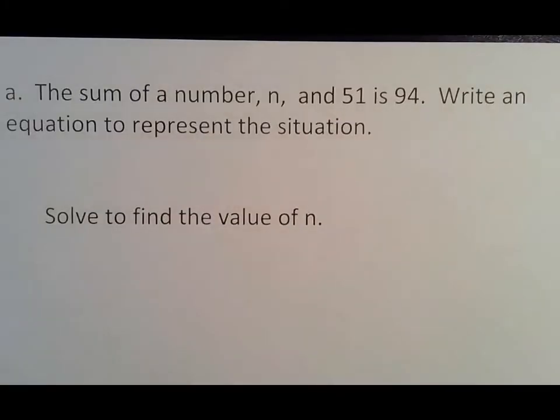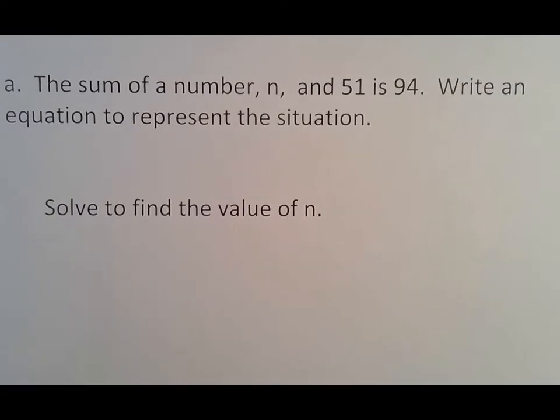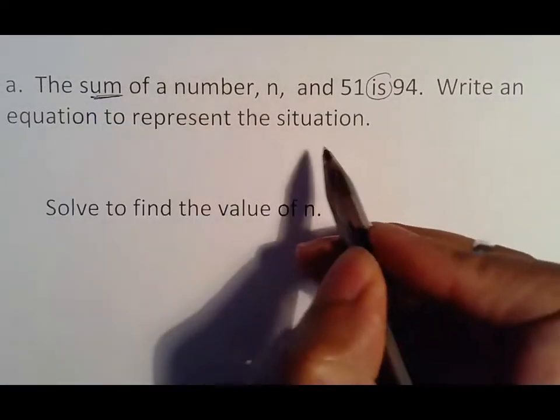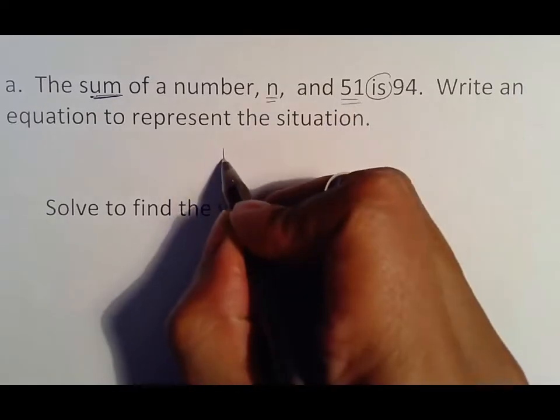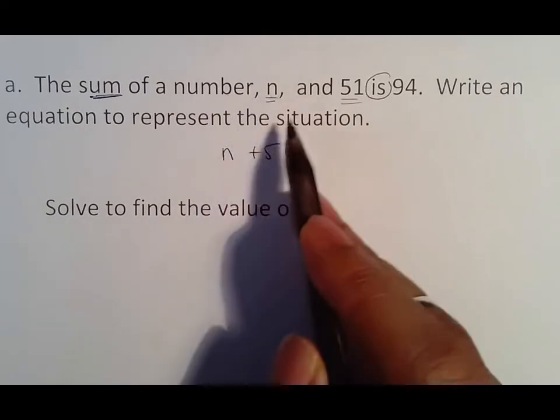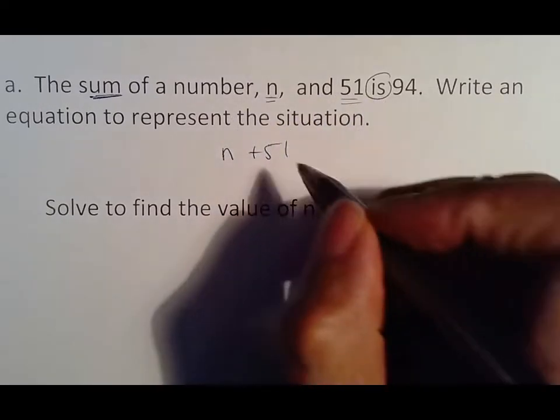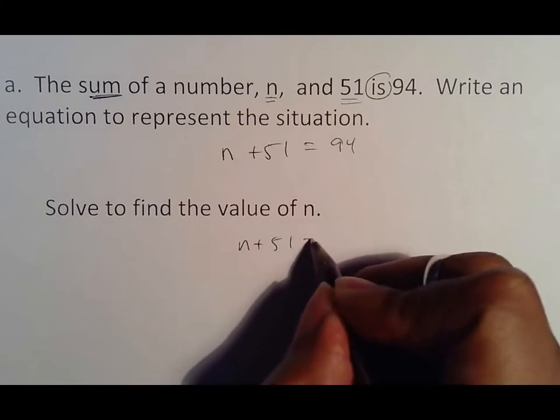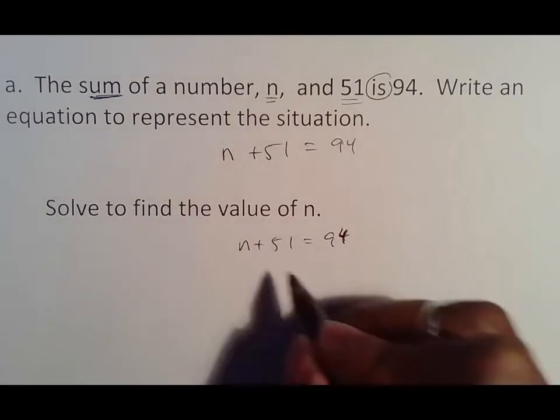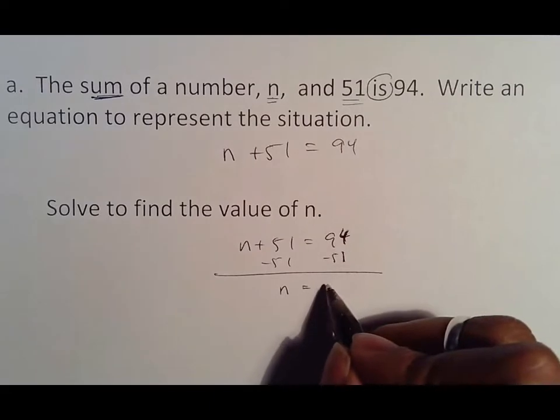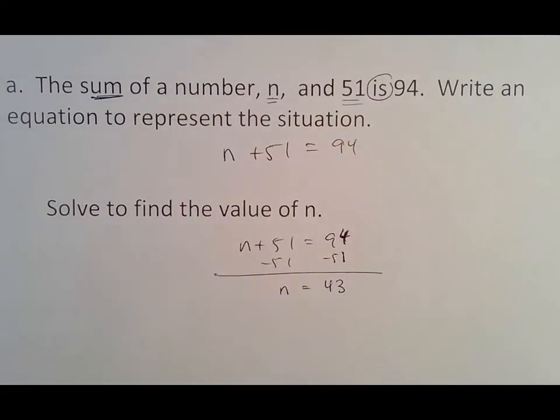You will see a problem like this: The sum of a number n and 51 is 94. Write an equation to represent the situation. So there's my is, which means equals. Sum means plus, and it's the sum of n and 51, so it would be n plus 51. The parts stay the same. If n was stated first, n goes first, 51 goes second. Is means equals, and then 94. Now we solve to find the value of n. We subtract 51 from both sides, getting 43 as our answer.